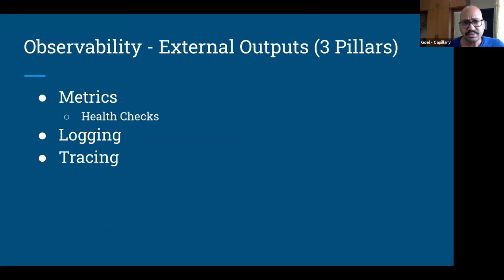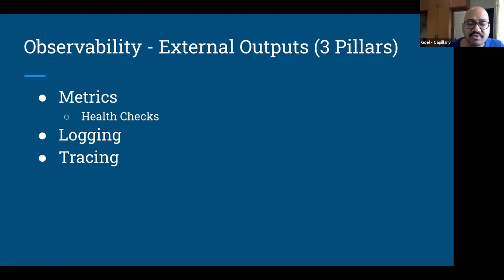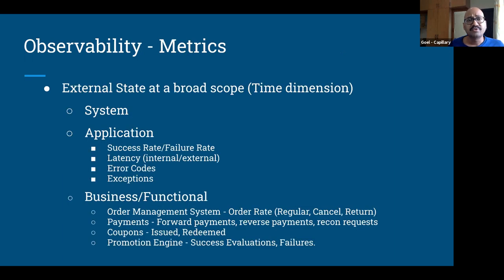The external outputs are where the three pillars of observability come in: metrics, logging, and tracing. Health checks are also a form of observability, but I club them under metrics. Let's spend a bit of time on each of these three pillars.